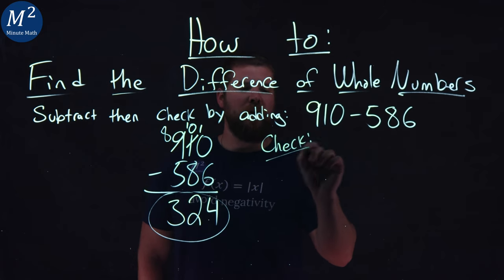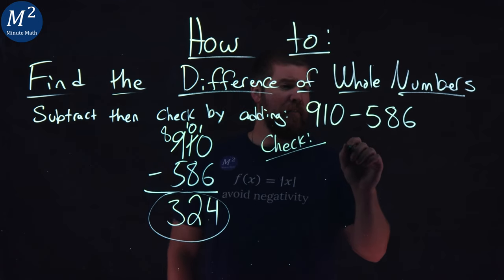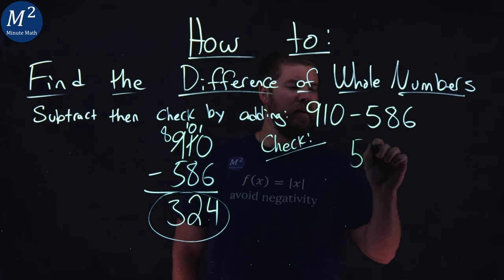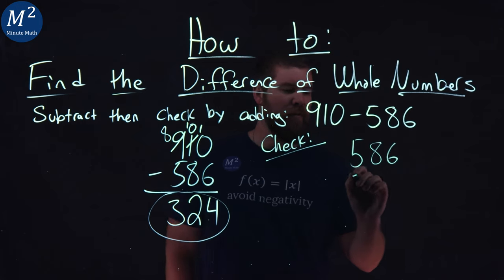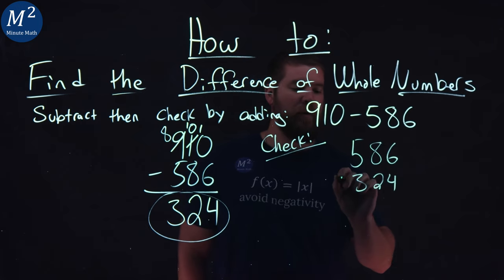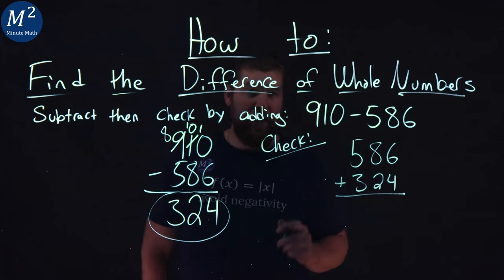Now, we've got to check our work. What I'm going to do is take 586, and I'm going to add 324 to it. That should give me 910.